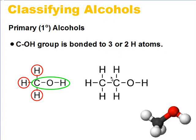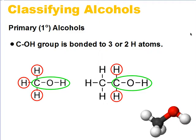In this example here, the C-OH is directly bonded to 2 hydrogen atoms. And because the carbon in the OH group is bonded to 2 or 3 hydrogen atoms, both of these alcohols are classified as primary alcohols.